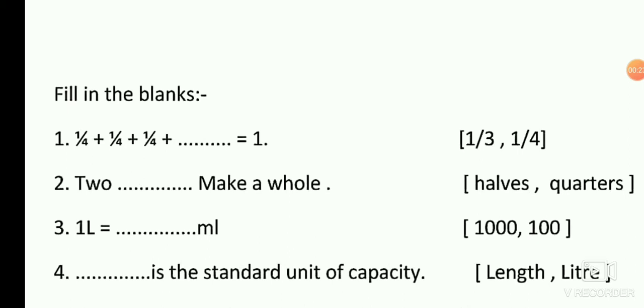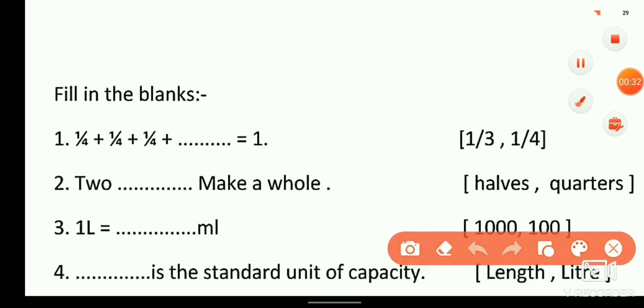As we all know, 4 quarters equals 1. Here you can see 3 quarters are already given, so only 1 quarter is missing. We will write 1/4 in this given space. This 1/4 and the other 3 quarters, all 4 quarters together make a whole, which is 1. So the right answer is 1/4.